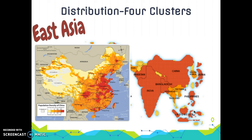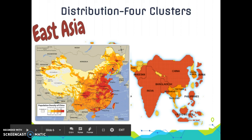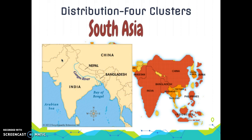The first cluster is East Asia, which holds one-fourth of the world's total population. China is the world's most populous country with 1.34 billion people. China's population is clustered in the eastern region near the coast and fertile river valleys, while the interior is very sparsely inhabited due to climate and physical features.